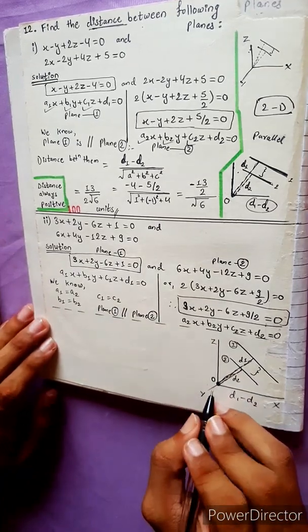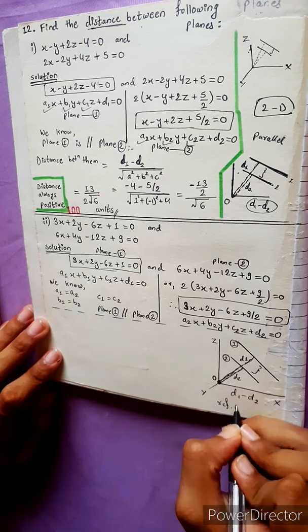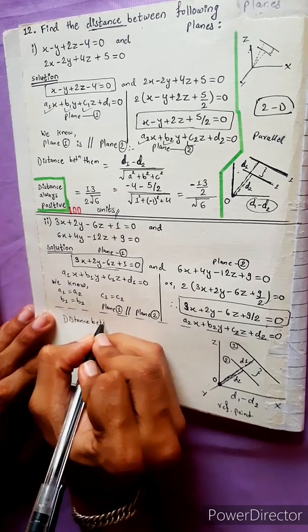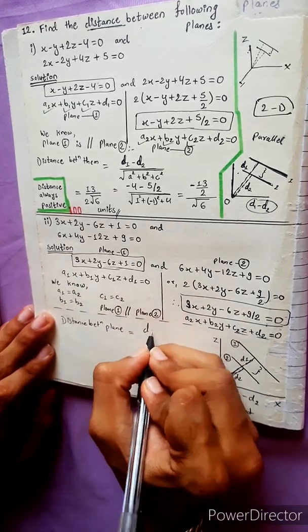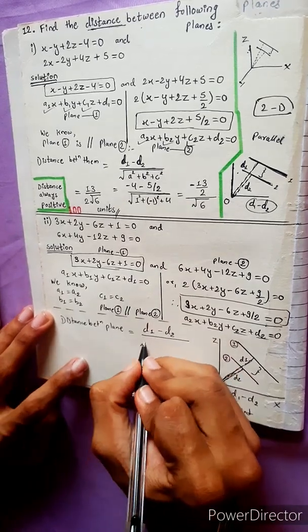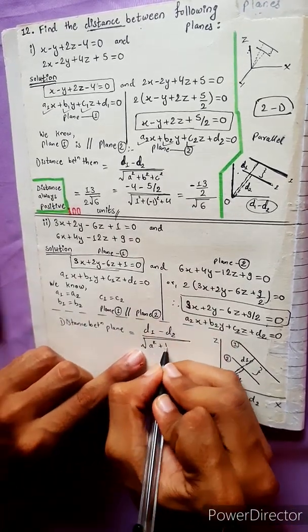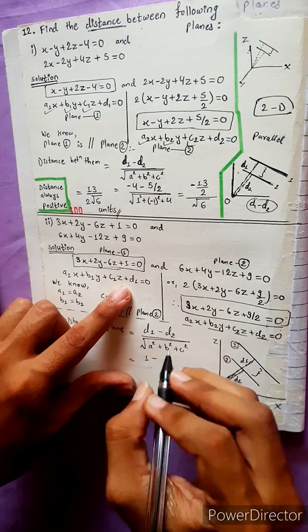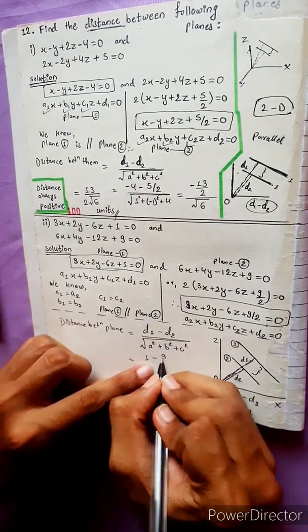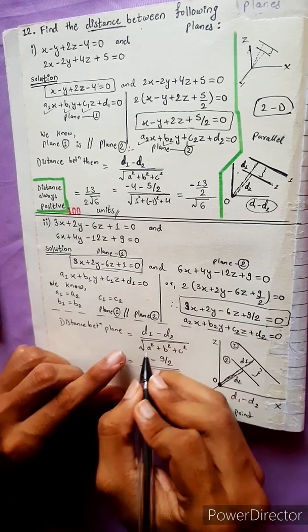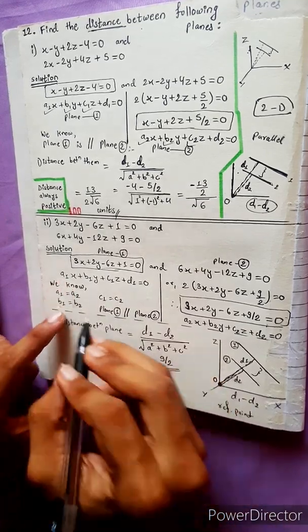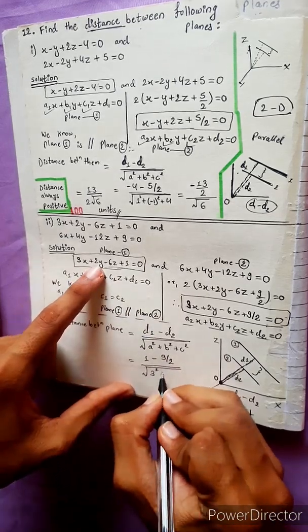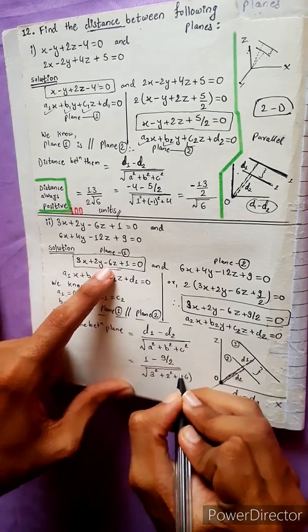The distance between the parallel planes is given by |d1 - d2| divided by √(a² + b² + c²). Here d1 - d2 = 1 - 9/2, and a = 3, b = 2, c = -6.